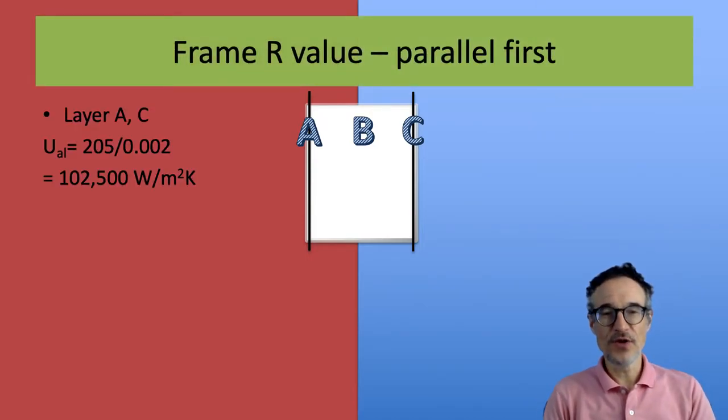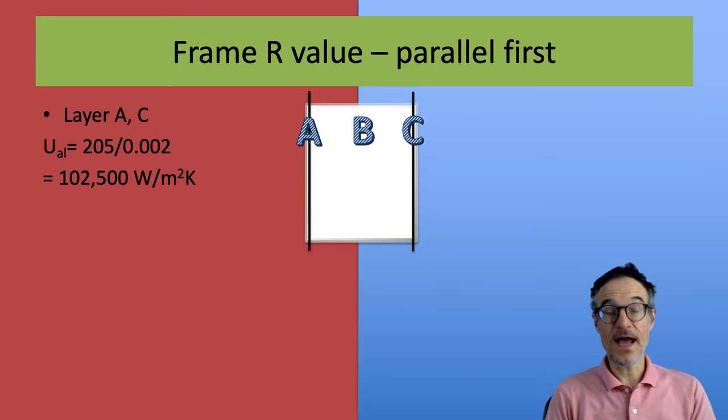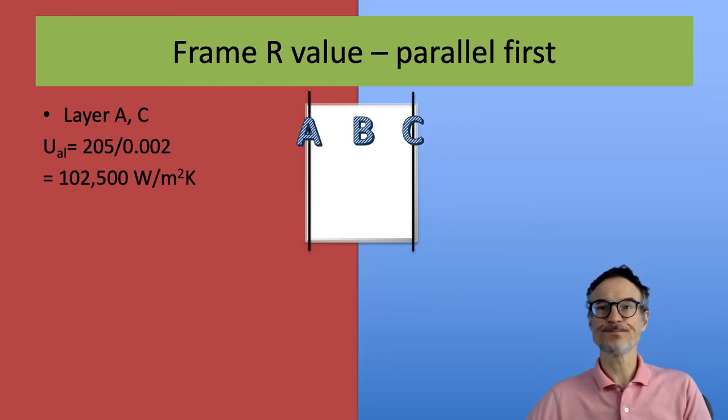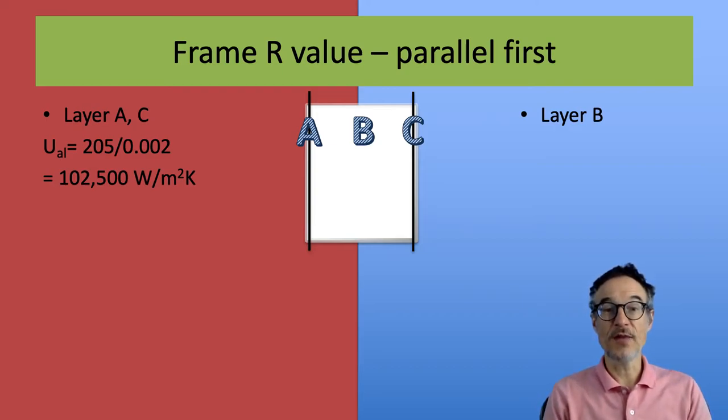So we can look at three layers. Layer A and C are just aluminum, and layer B has some air as well. So as we may not be surprised, the U value for the aluminum is very, very high. It's a very thin layer of aluminum and the heat is just going to go straight through it.